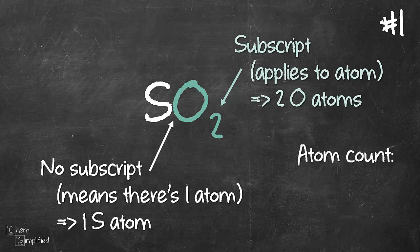So our total atom count is 1 for sulfur, 2 for oxygen, total of three atoms.